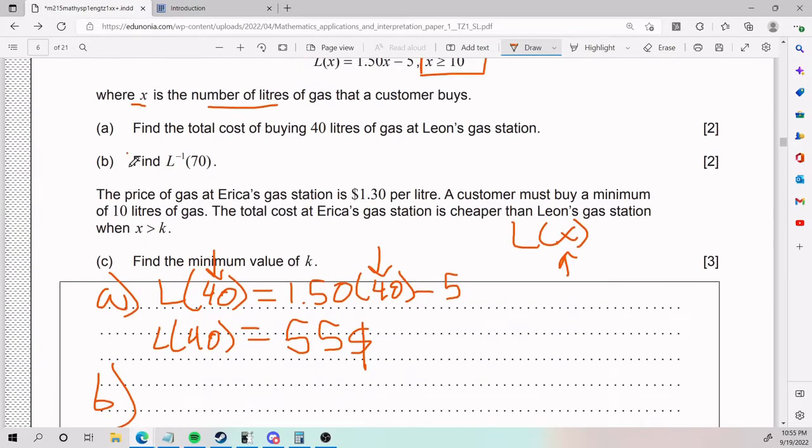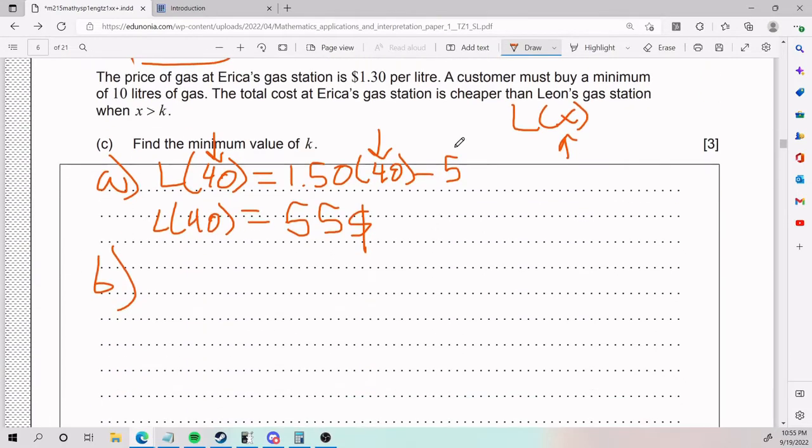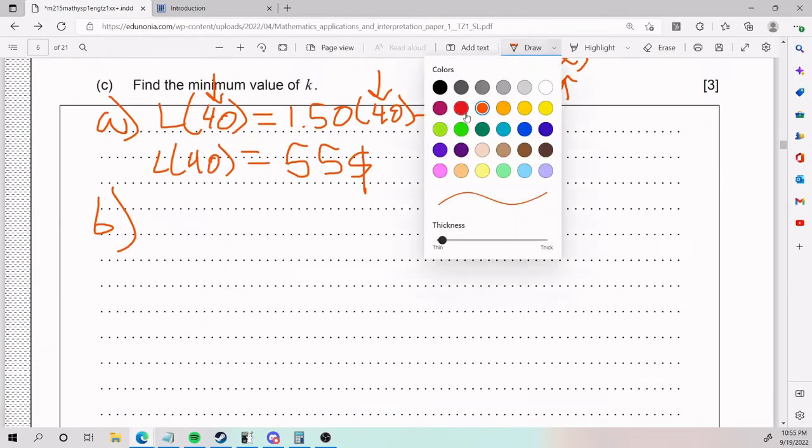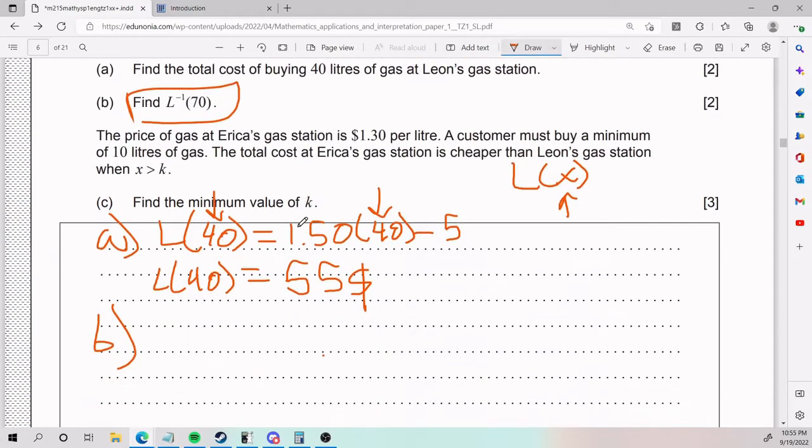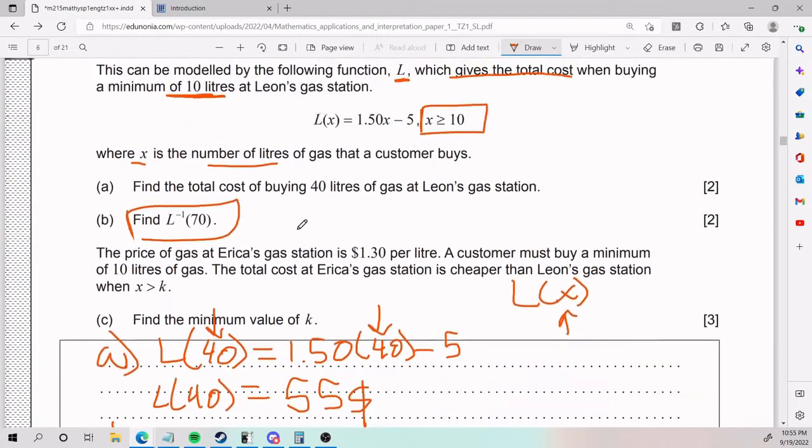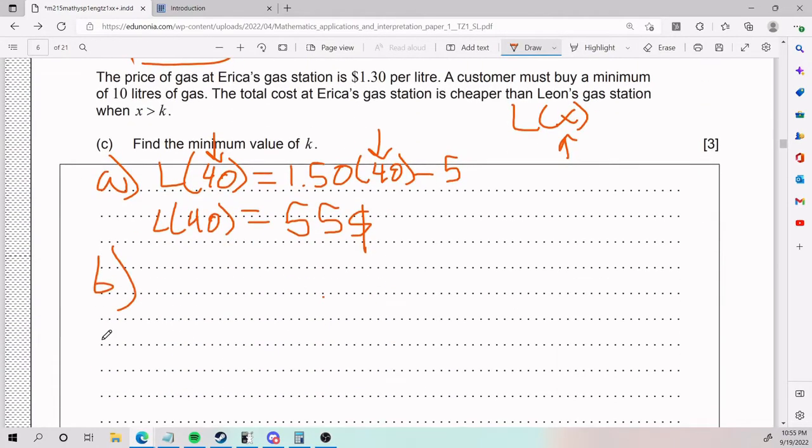Part B: Find the inverse function and then apply 70 to it. Now, this inverse function gets taught in a couple of ways. I'm just going to show how it was taught to me. It's the most intuitive for me. So this L(x) is pretty much the same as putting Y. So trust me on this: Y equals 1.50X minus 5.